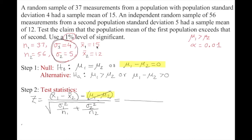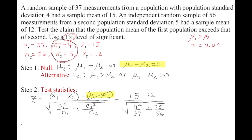Substituting: z = (15 - 12) divided by the square root of (4² / 37 + 5² / 56), which equals 3 divided by the square root of (16/37 + 25/56). Computing this gives approximately z = 3.20.